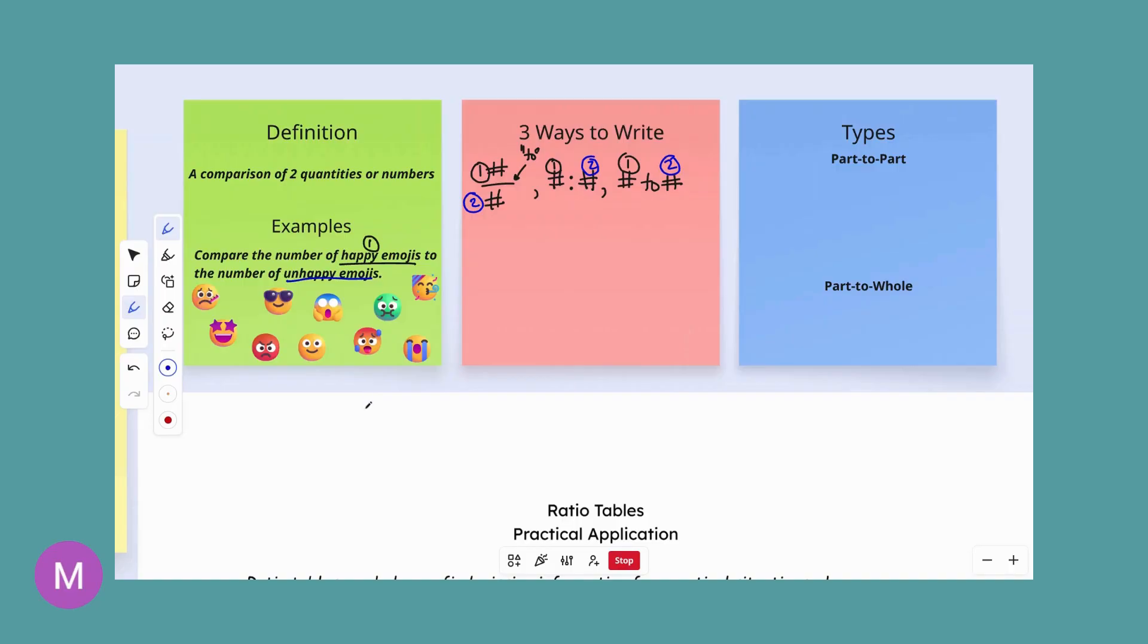So let's go ahead and do this here. Let's count our happy emojis. So we have one, two, three, four. We have four happy emojis to unhappy. Let's count our unhappy emojis. One, two, three, four, five, six. So we have six unhappy emojis.